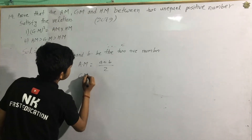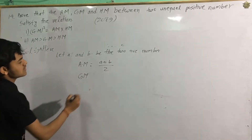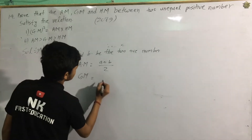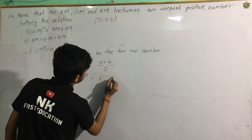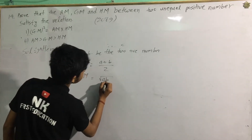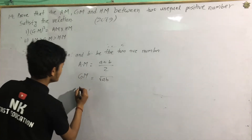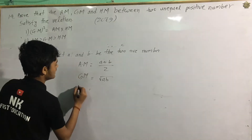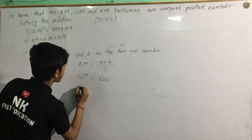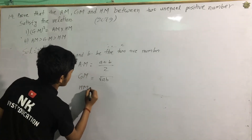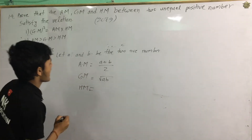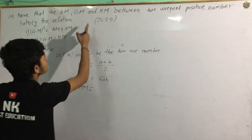The arithmetic mean AM equals (a plus b) by 2, and the geometric mean GM equals root under ab, that is square root of a into b.